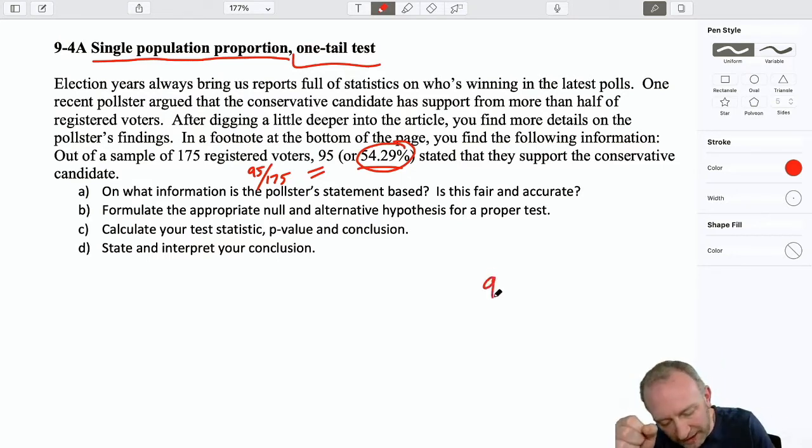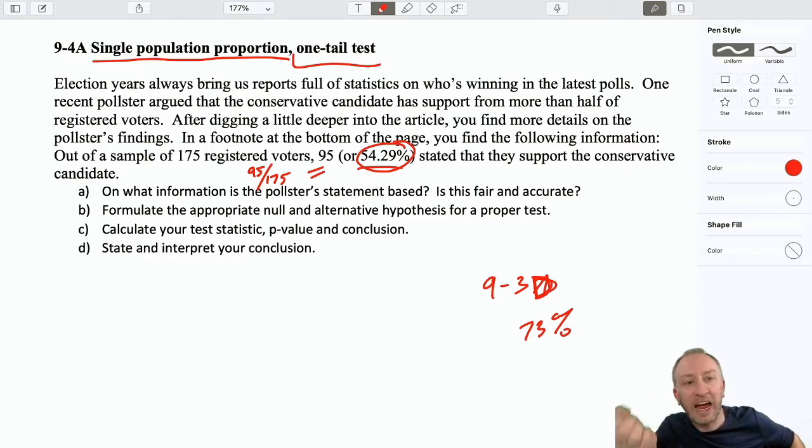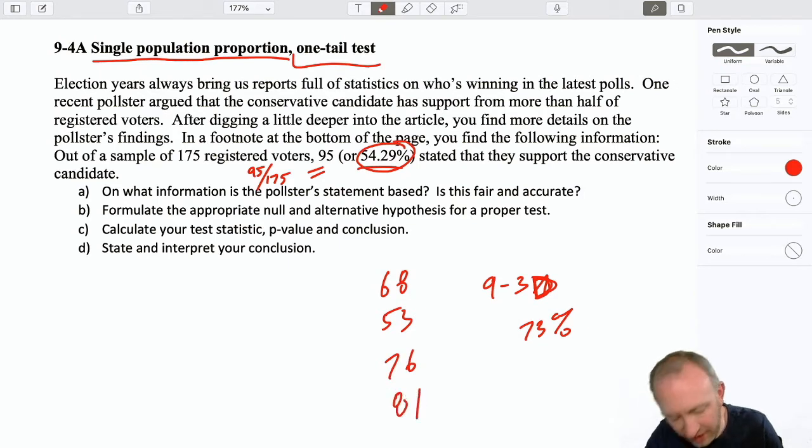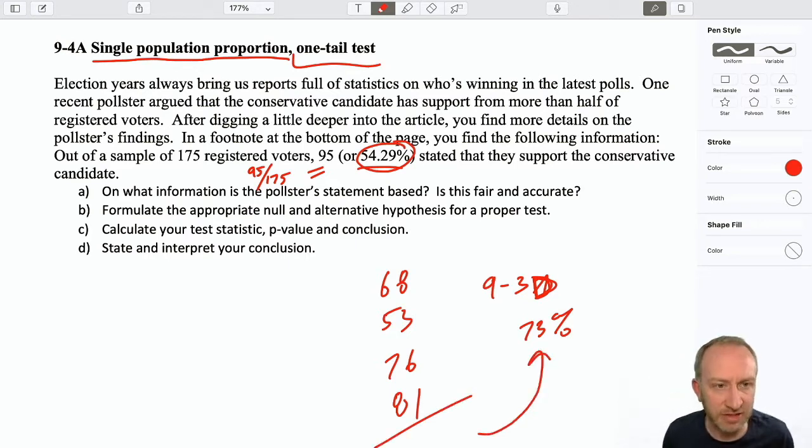The previous one, if you go back and you look at problem 9.3.d, it was an average grade that was given. We had an average grade of 73%. This is an average because our sample consisted of a whole bunch of other individual students' grades. So some students, maybe 68, maybe 53, maybe 76, maybe 81, so on and so forth. Those were all the individual data points that then when we obtained that average, it gave us 73%. So that was a single population test on an average.